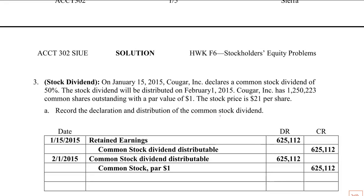We're still moving on with Stockholder's Equity homework solution. We're on number three, and it's a stock dividend, not a cash dividend — a pro rata distribution of shares of stock. 50%, that means it's a large stock dividend, which is done at par. Large at par, so it's greater than 25%. Large stock dividend.